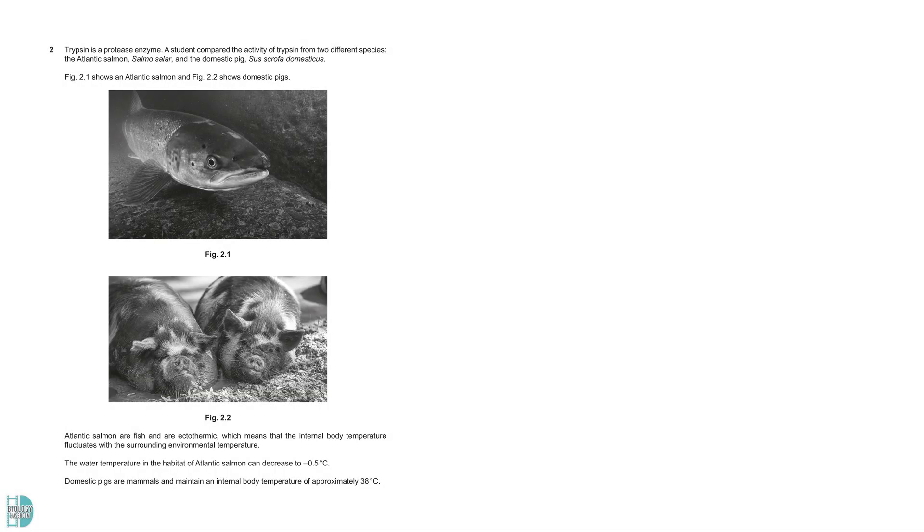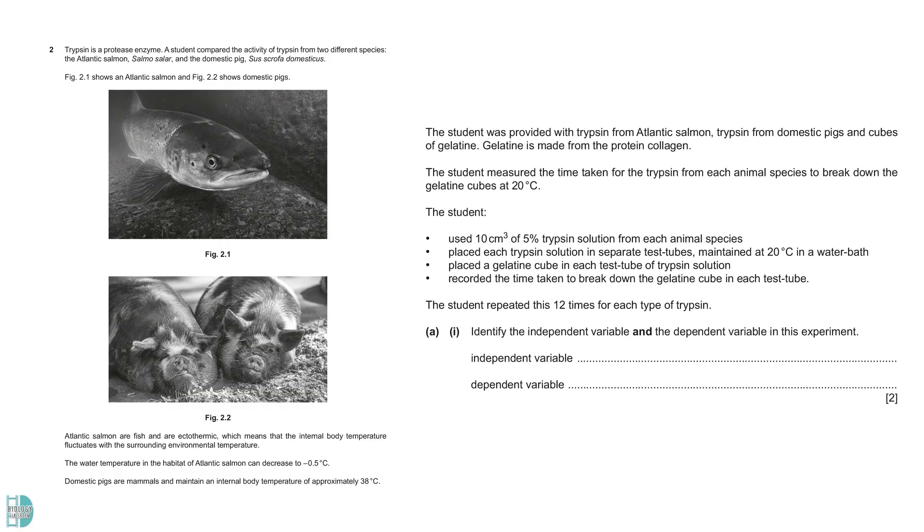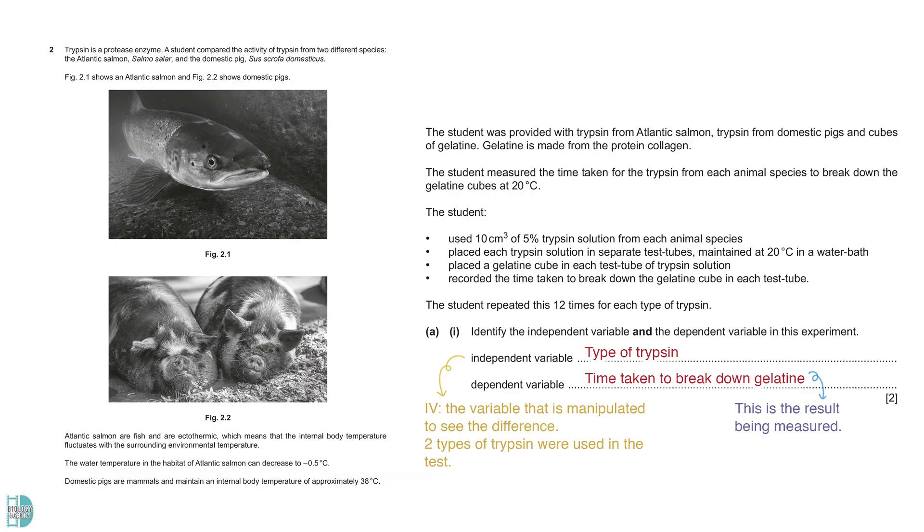In this question, we have an investigation comparing trypsin from two different species. A student used enzymes to break down gelatin cubes and measured the time it took for the reaction to occur. The independent variable is the type of trypsin. This is the variable that is manipulated to see the difference. Two types of trypsin were used in the test. The dependent variable is the time it takes to break down gelatin. And this is the result being measured.